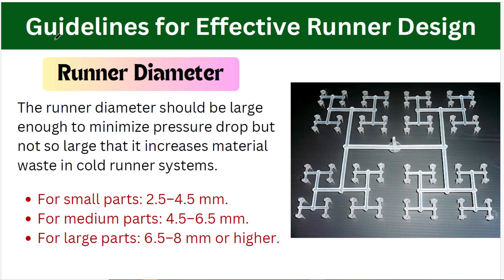The guidelines for the effective runner system include runner diameter and the length of the runner — both are very important, and their ratio is also critical. For a small part you can choose 2.5 to 4.5 mm, for a medium part 4.5 to 6.5 mm, and for a large part 6.5 to 8 mm or higher. Runner diameter depends on the material being used, size of the part, viscosity of the material, and the pressure requirement in injection molding. This is a general guideline.